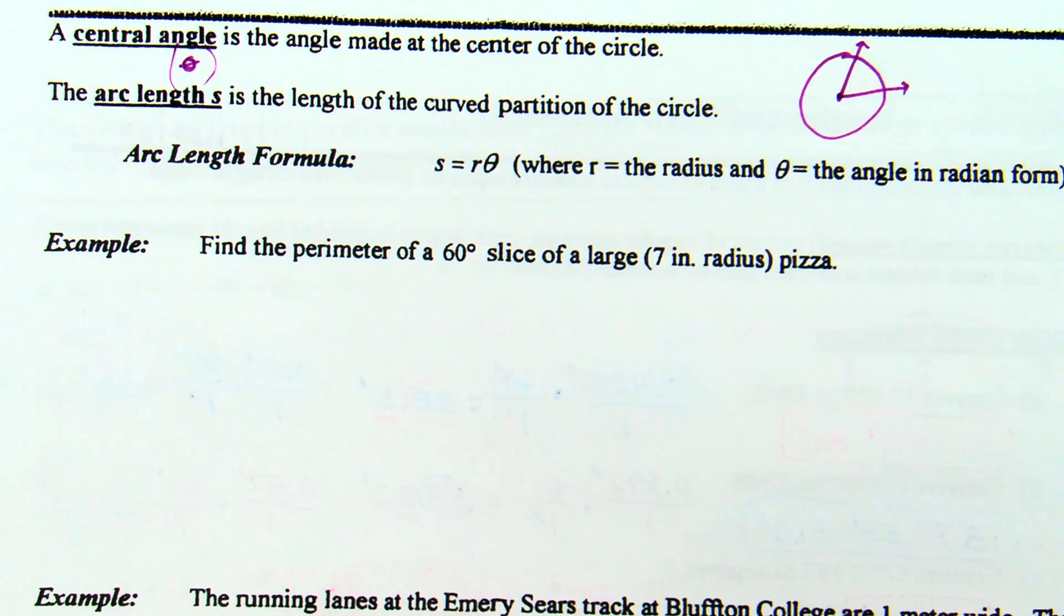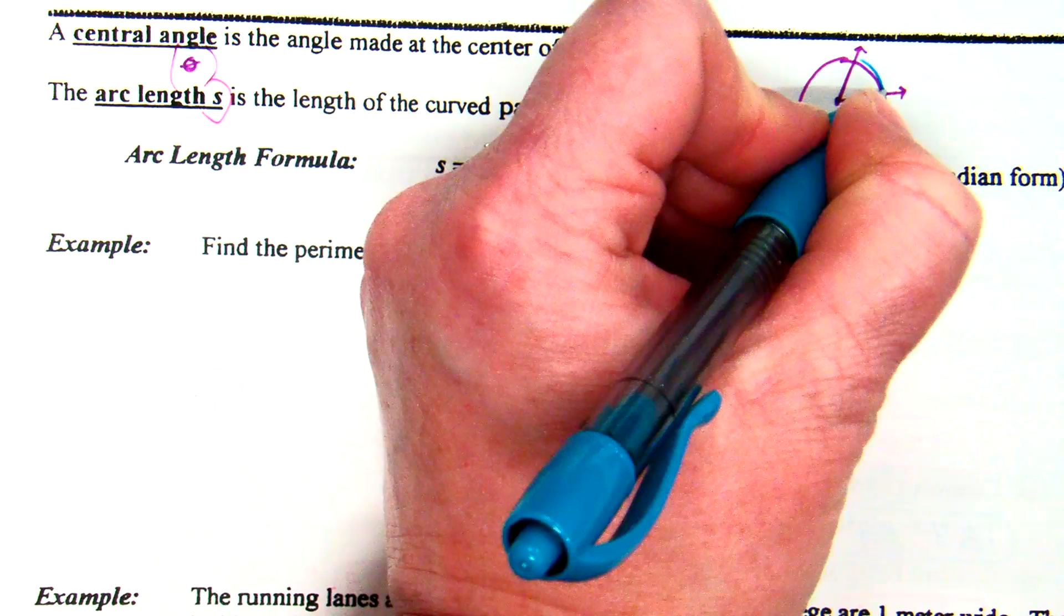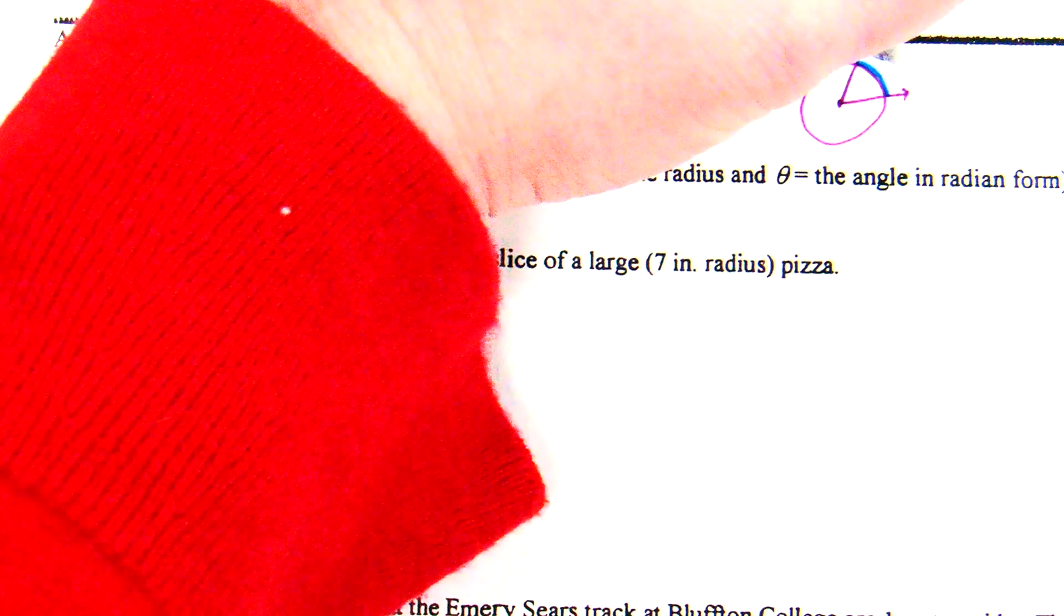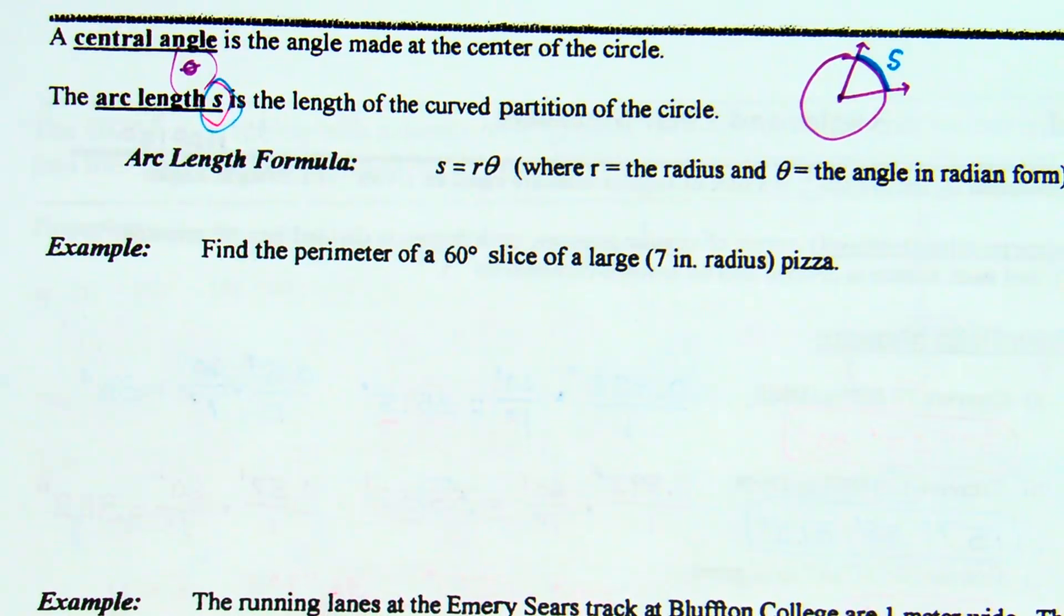Now, before I forget, you will often see when we talk about angles in trig that we will use theta for angles. Are you guys familiar with theta? Theta is your typical angle mark. It is the Greek letter theta - a circle with a line through it. Now we are going to learn the arc length formula. And the arc length formula allows us to find the arc length. The arc length is the length of the curved partition of the circle.